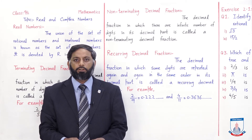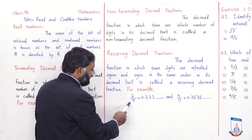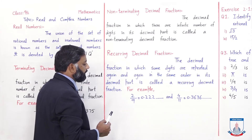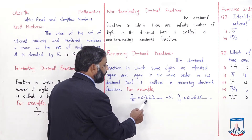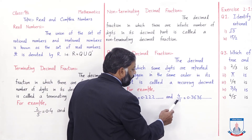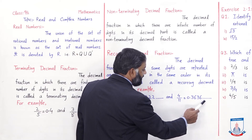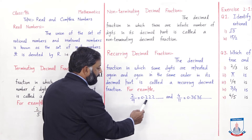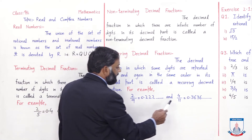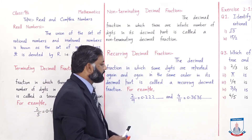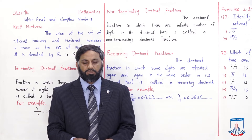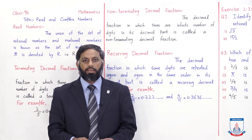For example, 2/9 کو divide کریں تو result 0.222... آتا ہے — 2 repeat ہوتا جاتا ہے اور remainder کبھی 0 نہیں آتا۔ Similarly, 4/11 = 0.3636... تو یہاں 3 اور 6 same order میں repeat ہوتے جاتے ہیں۔ ایسی decimal fractions جن میں decimal part کے digits same order میں repeat ہوں، recurring decimal fractions کہلاتی ہیں۔